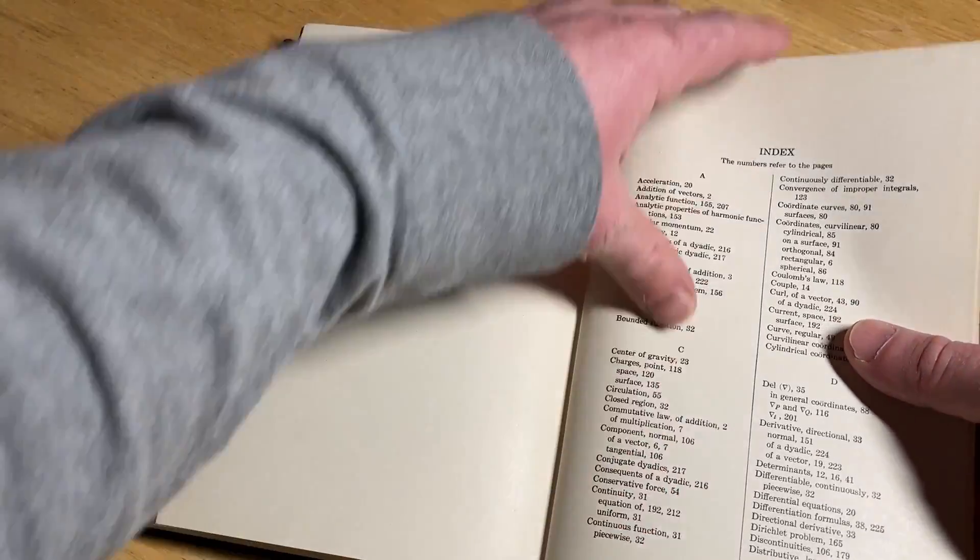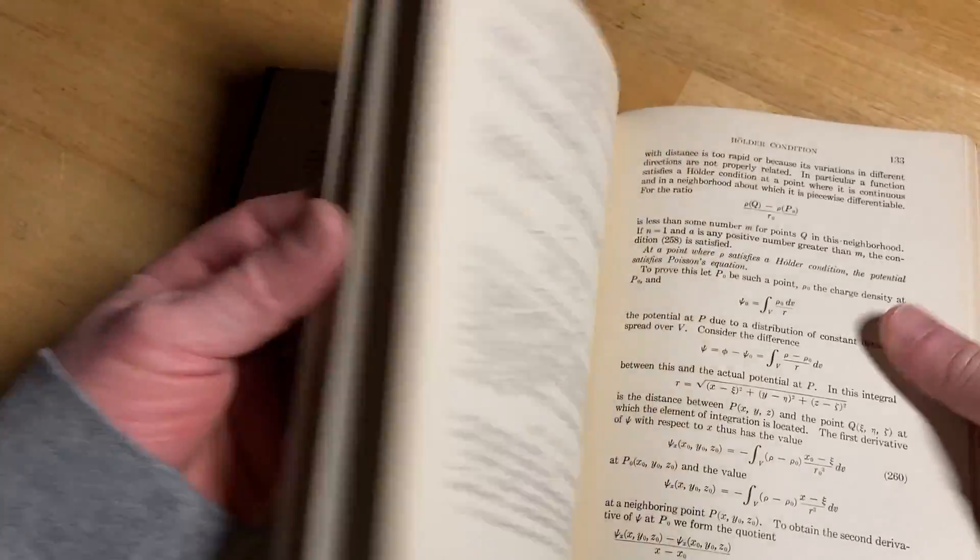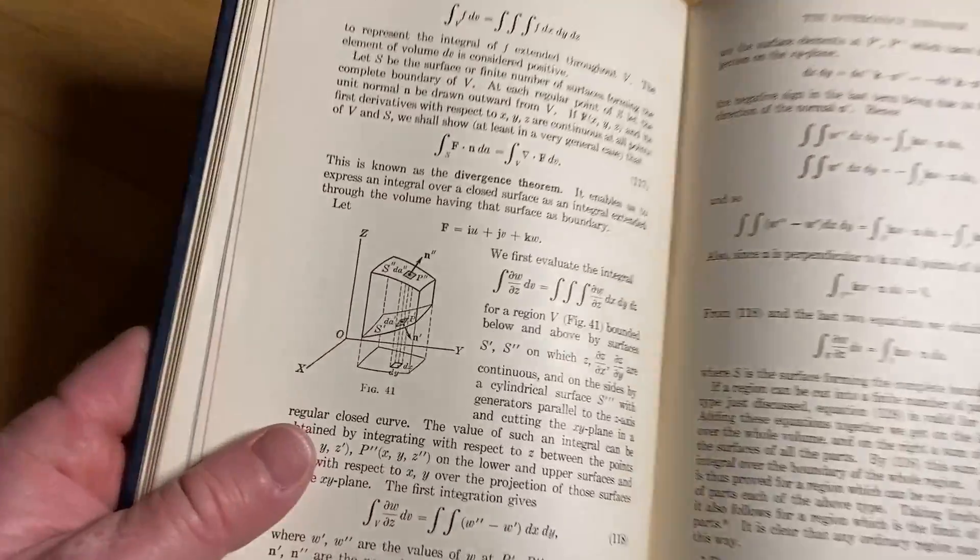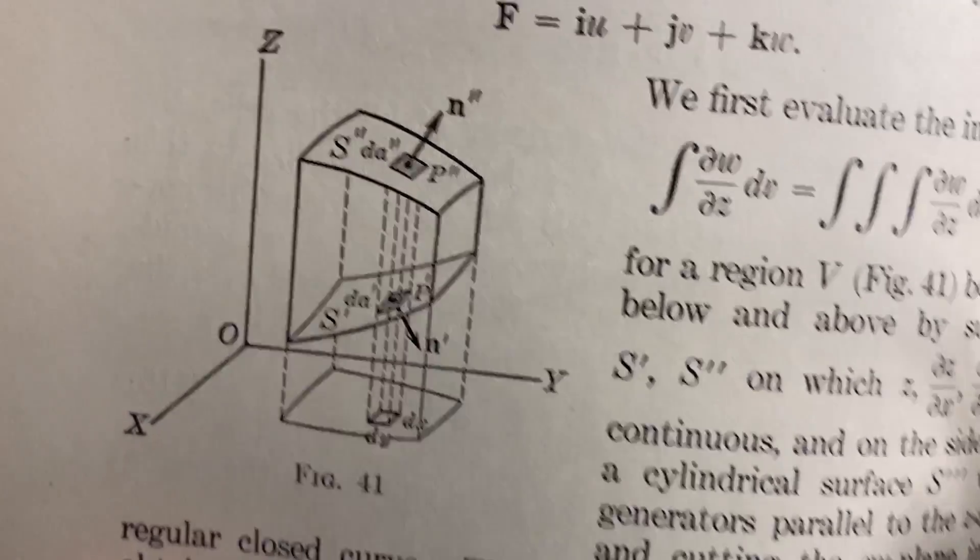So we've got an index here. The numbers refer to the pages, it says. So you have a nice little index with things here in the back. Yeah. Really nice book. Really nice book. I've got to give it another whiff. Oh, the divergence theorem. Look at that. That's cool. Really cool pictures, right? So, amazing.